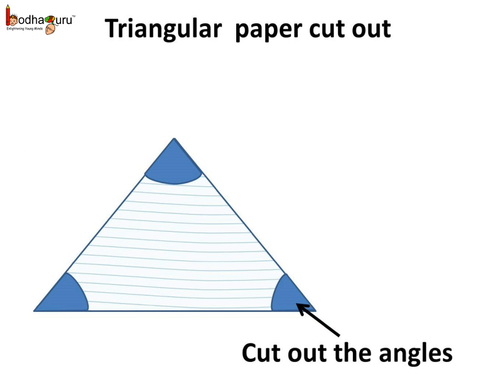Now, the triangle has three angles. We cut out the three angles at the three corners or the three vertices of the triangle.